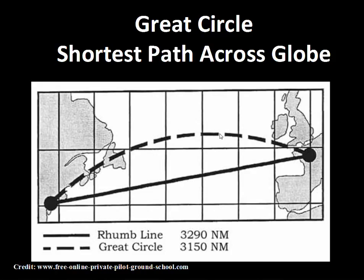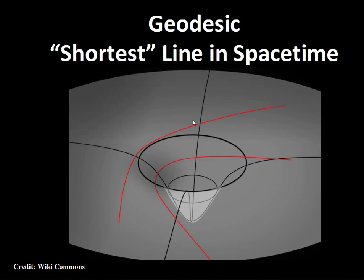Here is a representation of curved space-time, and the lines shown in red are geodesics going from point A to point B. Going straight through is not the shortest path in space-time; following the red line is the shortest path. In general relativity we talk about the warping and bending of space-time, and these red geodesic lines are the best path that light can take to get from point A to point B.